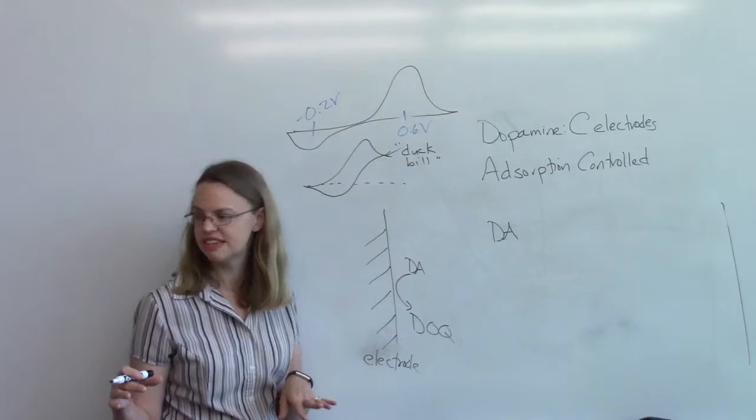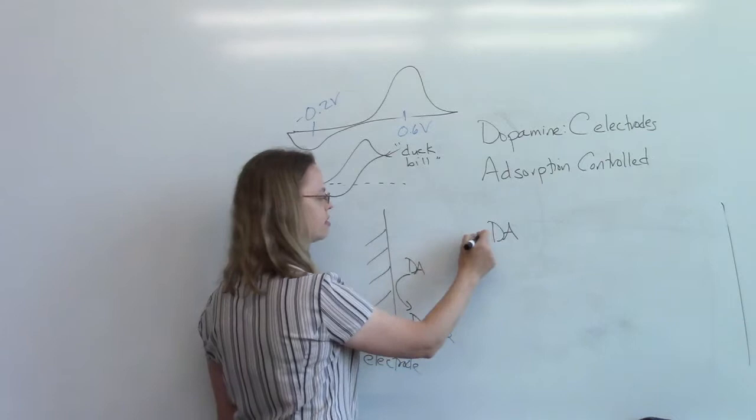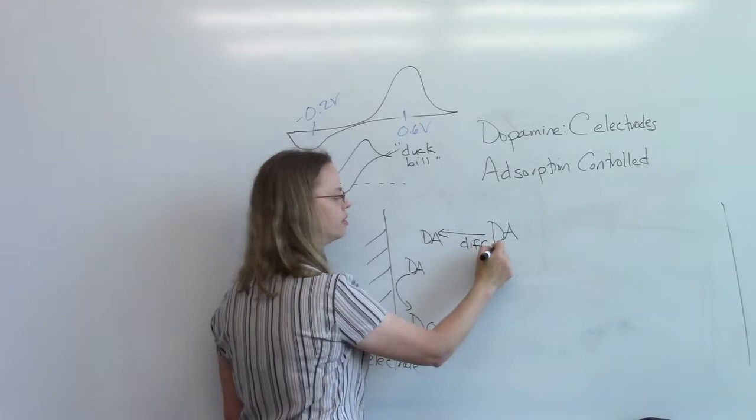Well obviously we only ever oxidize something right at the electrode surface. That's one of the hallmarks of electrochemistry. If it's not at the electrode surface, it doesn't happen. So we've got dopamine going to dopamine at the electrode surface. But maybe dopamine is hanging out over here. And so there's a couple processes that can occur.